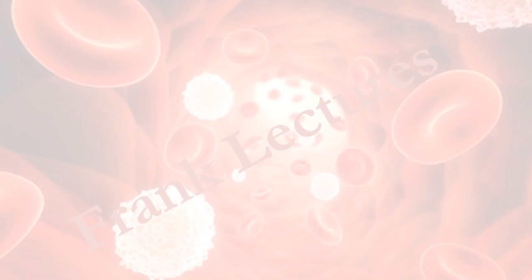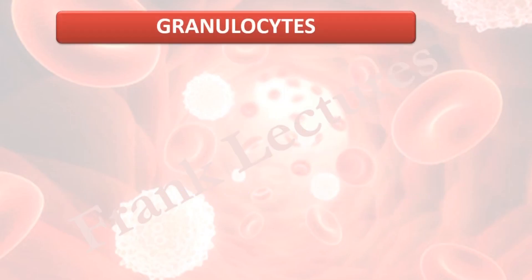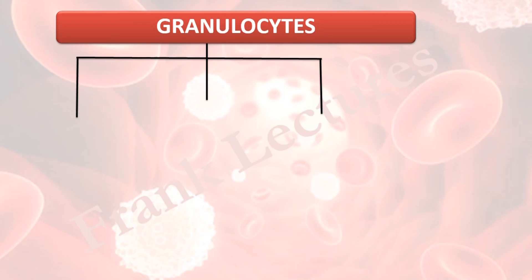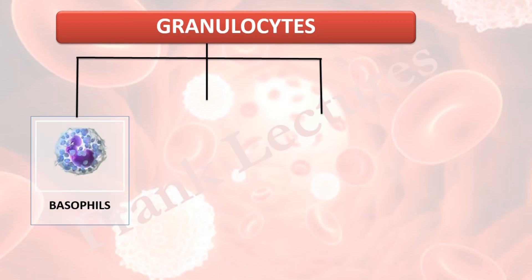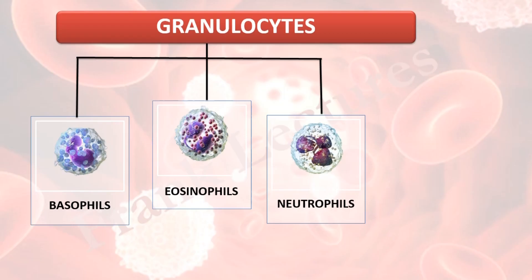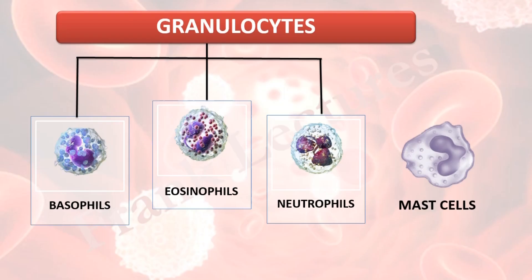In this video lecture, we studied granulocytes, which are of 3 types: basophils, eosinophils, and neutrophils. We also studied mast cells, which are similar to basophils in appearance and function. In the next video lecture, we will cover agranulocytes.